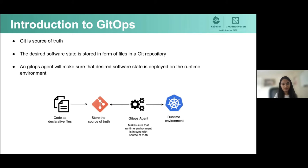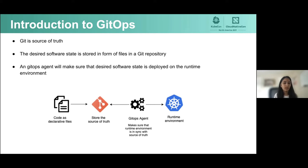There are two major components of that workflow. First, the desired state of your software is stored in the form of files on Git. Because we are talking about cloud native, your software environment will be Kubernetes, and you'll be storing Kubernetes manifests on Git. The second part is that there is a GitOps agent — a piece of automation software — whose sole responsibility is to make sure that the desired software state keeps running on the runtime environment.